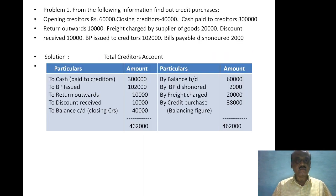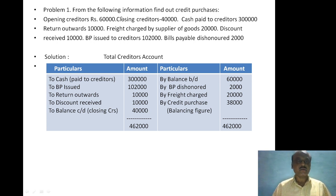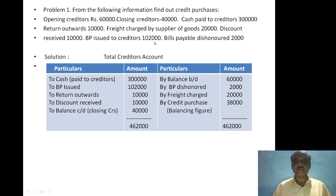The problem is as follows: find out credit purchases given opening creditors rupees 60,000, closing creditors rupees 40,000, cash paid to creditors rupees 3 lakh, return outwards rupees 10,000, freight charged by supplier of goods rupees 20,000, discount received rupees 10,000, bills payable issued to creditors rupees 1,02,000, and bills payable dishonored rupees 2,000.